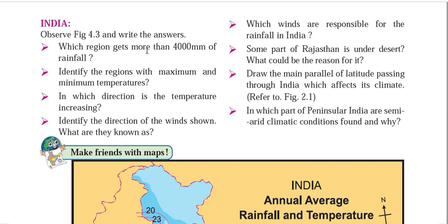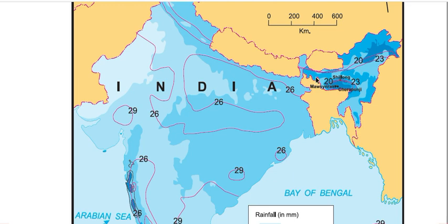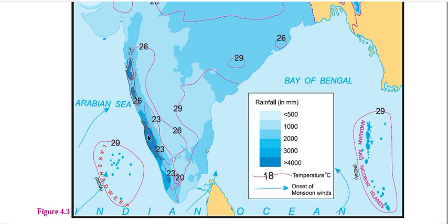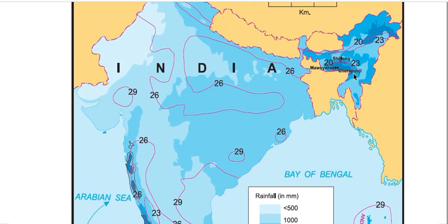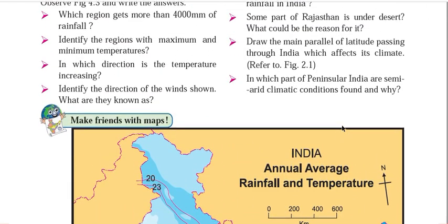The first question is: which region gets more than 4000 mm of rainfall? Using the color code, the dark blue region shows the highest rainfall — greater than 4000 mm. You can see this in Meghalaya, some parts of West Bengal, Assam, Arunachal Pradesh, and some parts of the Western Ghats. We have Mawsynram and Cherrapunji in the Khasi Hills near Shillong in Meghalaya, where maximum rainfall in India — and in fact the entire world — occurs, exceeding 11,000 mm.